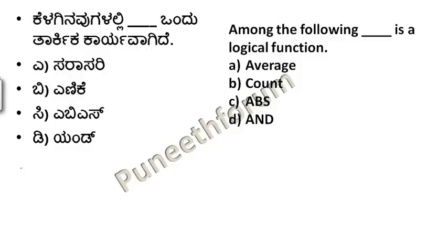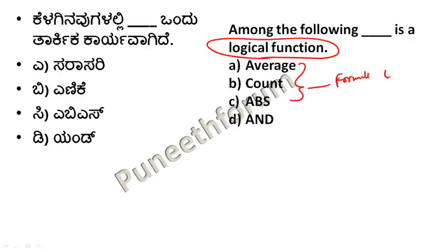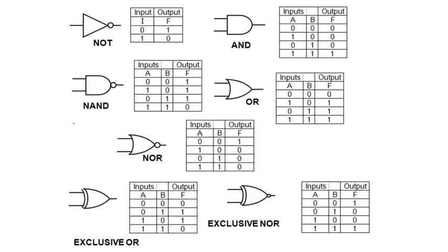In the next topic, logic functions are done with logic. Simple question — previous videos covered these questions. If you use Average or Count, you can use the formula in Excel. This is the functions key. AND gate, OR gate — if you already know these questions, you can use them in the exam. KEL or KPSL: AND gate will follow 0.